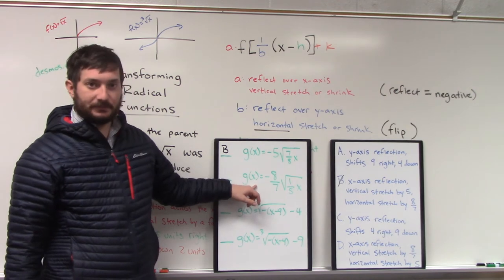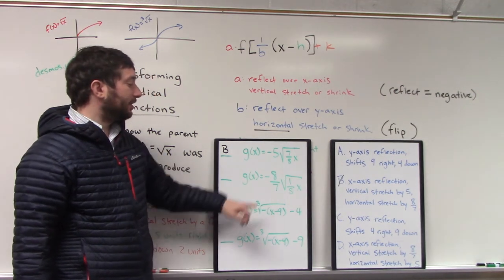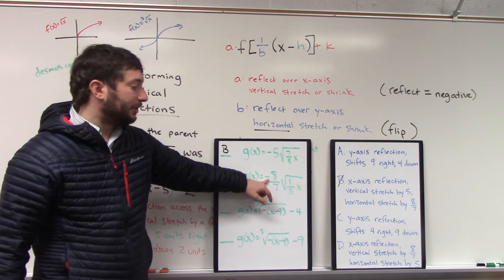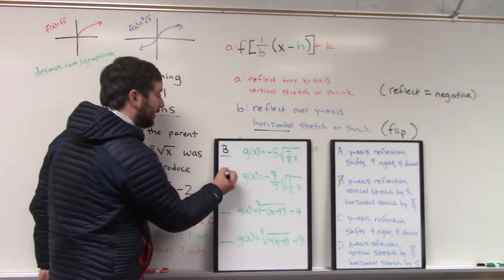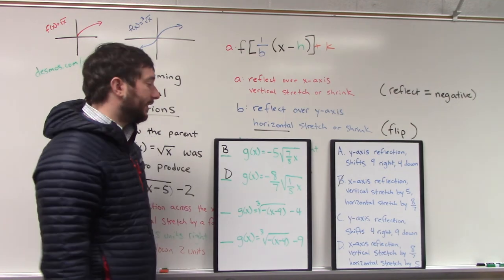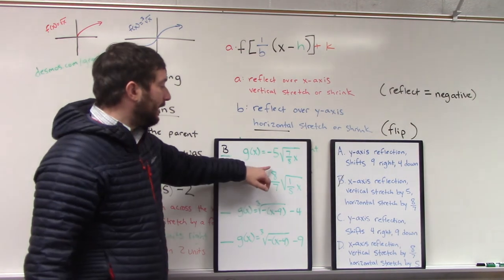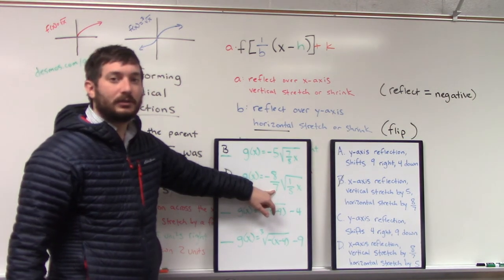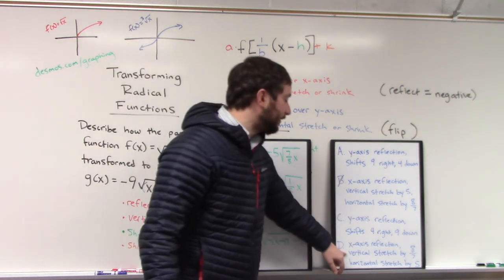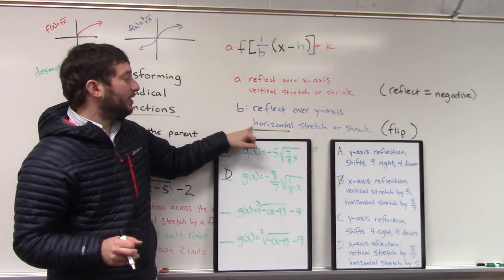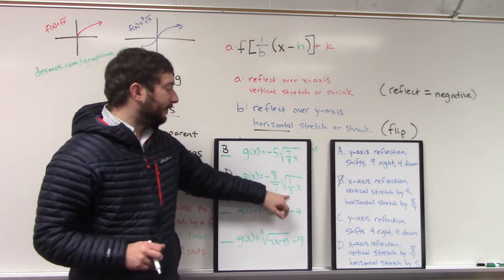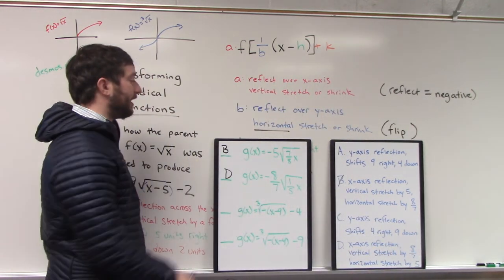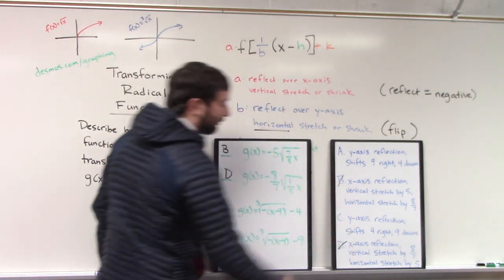For g of x, the next transformed square root function — what matches its description? We again have an x-axis reflection, so it should be answer choice D, the only other one with an x-axis reflection. 8 over 7 is bigger than 1, and we don't flip anything that's vertical — this is a vertical stretch by 8 over 7. We only flip horizontal transformations. So that 1 over 5 flips to 5 over 1, and 5 divided by 1 is just 5 — this is a horizontal stretch by 5 when we flip it.